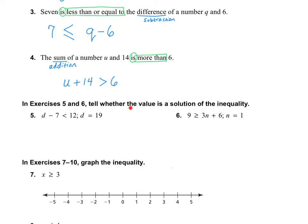In numbers 5 and 6, tell whether the value is a solution to the inequality. Number 5: we need to see if 19 is a solution. Substitute 19 in for d. The rest stays the same. 19 − 7 = 12, so this becomes 12 < 12. That is not correct — 12 is equal to 12, not less than it. So the answer is no. If it were ≤ it would have been yes, but since there's no equal to part, the answer remains no.